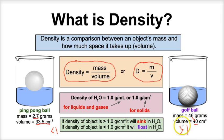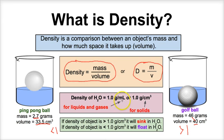Anytime you have a density that is greater than one, it will sink in water. That is because the density of water is one gram per milliliter — meaning that for every one milliliter of water it's going to have a mass of one gram, or every one gram of water will take up one milliliter of space.